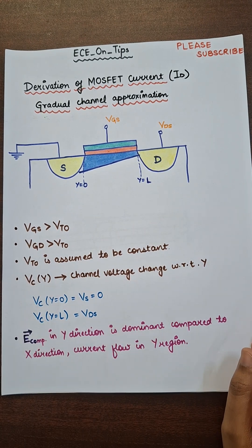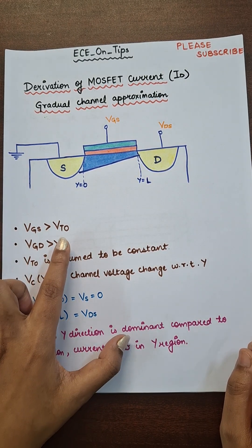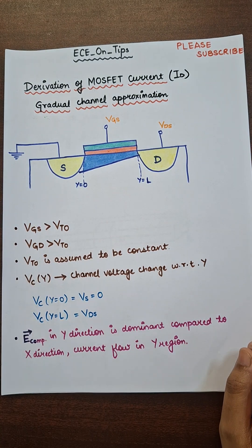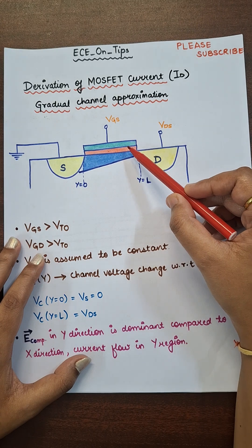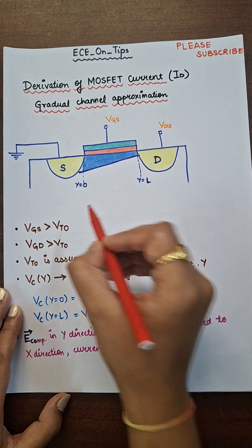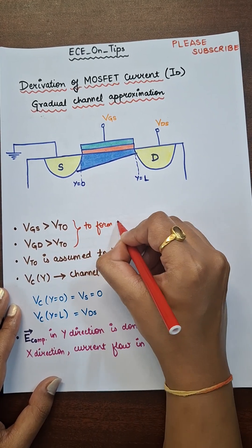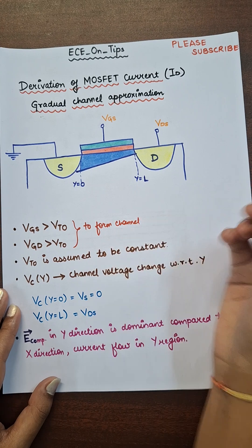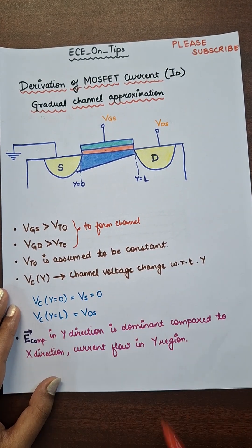To form the channel we require two conditions. First, VGS has to be greater than the threshold voltage VTO. Second, VGD — the voltage across the gate terminal and the drain terminal — also has to be greater than the threshold voltage VTO. VTO is the threshold voltage which we have assumed to be constant.